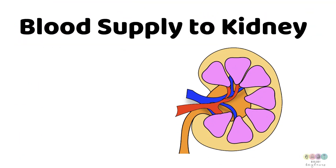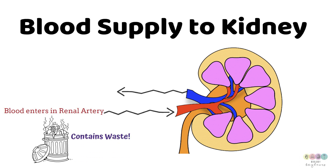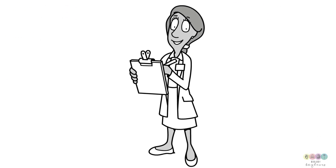Blood supply to the kidney is essential — if you don't understand the blood supply you don't understand urine formation. Blood enters each kidney through the renal artery, which branches directly off the aorta, and the blood in the renal artery contains waste. Blood flows out of the kidney via the renal vein, which is filtered blood containing no waste, and it links directly with the vena cava.